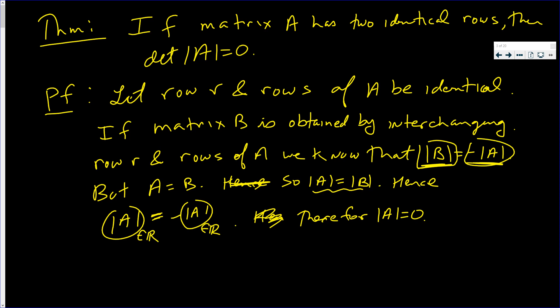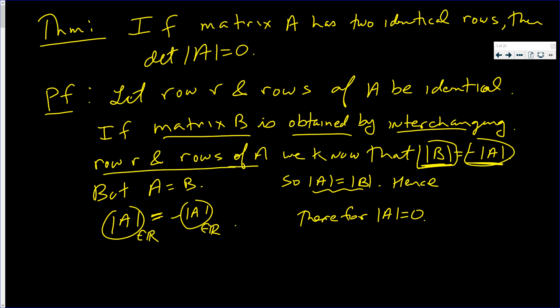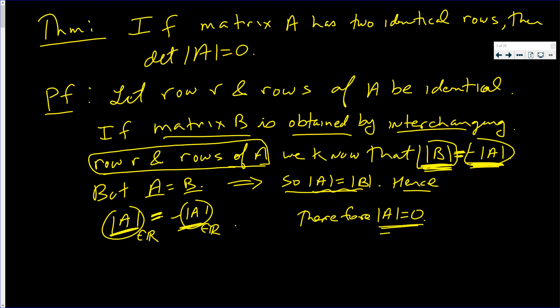I used the last theorem we proved: if you interchange two rows of a matrix to get matrix B — where B is obtained by interchanging row R and S of A — we know that the determinant of B and the determinant of A differ by a sign. But if you interchange the same two identical rows, it turns out that B equals A. So I write the determinant of B this way, and the determinant of negative A that way, with those two horizontal lines in between. If two real numbers are equal and differ by a sign, that value is zero.